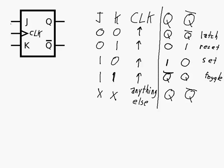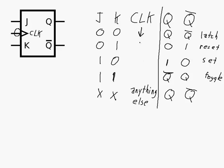For the falling edge triggered JK flip-flop, we would have a bubble at the clock input. The truth table is going to be the same, except we're dealing with the falling edge of the clock for each of the four cases. If there's no falling edge, nothing changes — Q will stay at Q and Q-bar will stay at Q-bar.